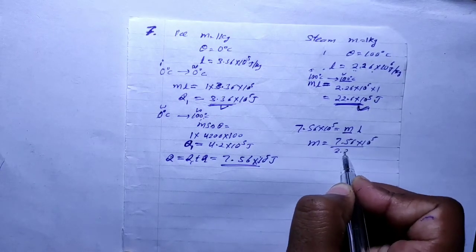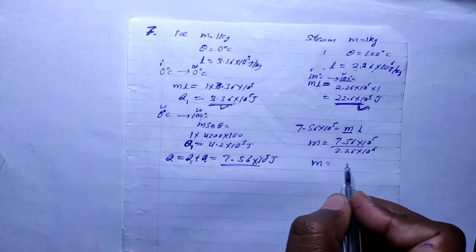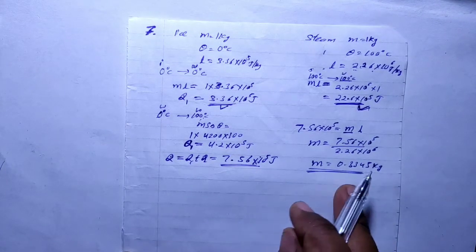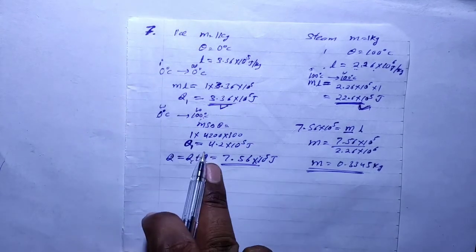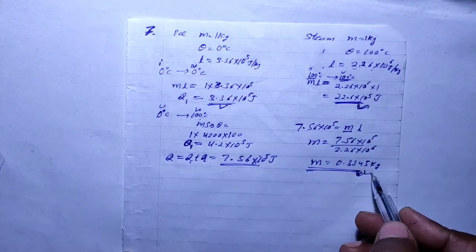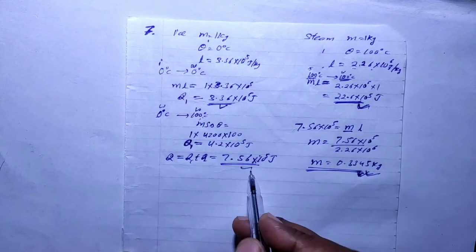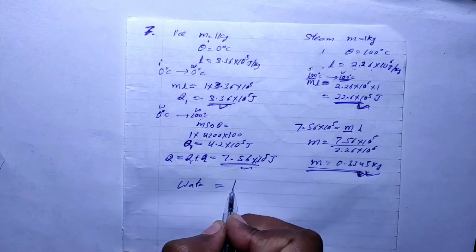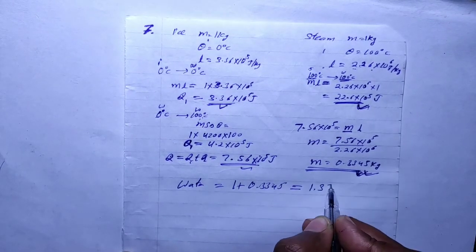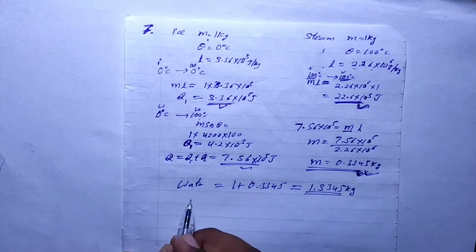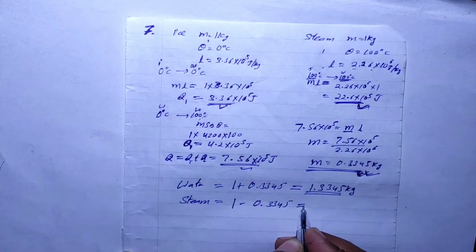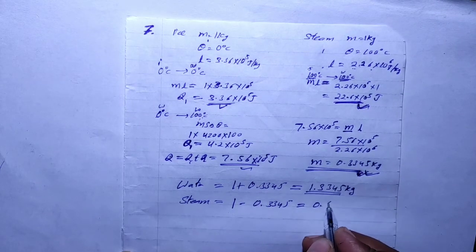Using the remaining energy calculation with 5 upon 2.26 into 10^6, the final composition works out to approximately 1.3345 kg and 0.665 kg — giving the equilibrium composition of the system.